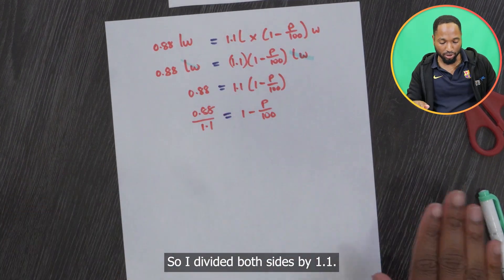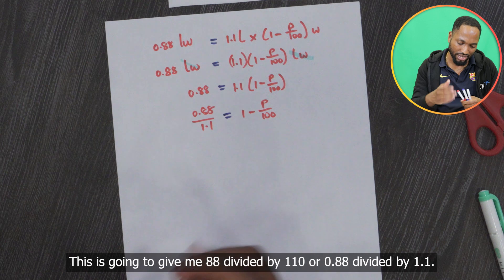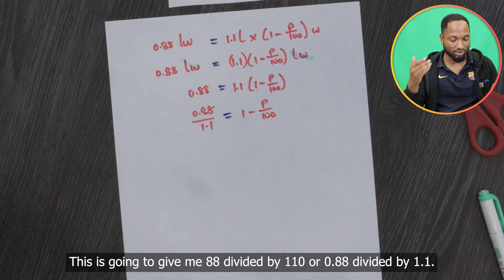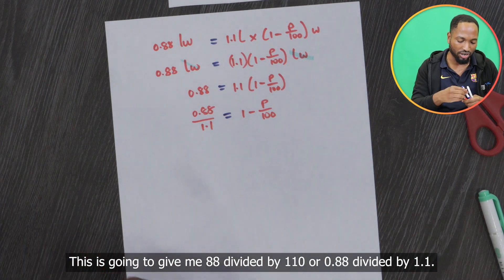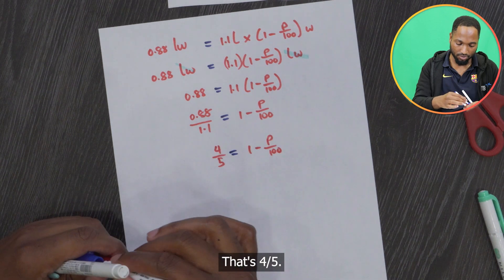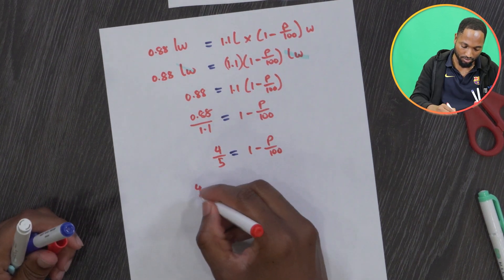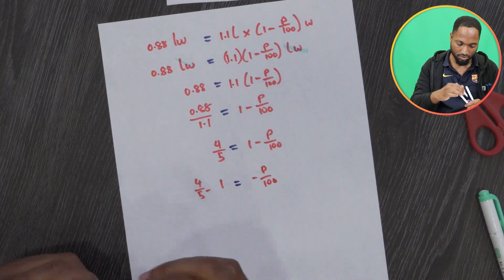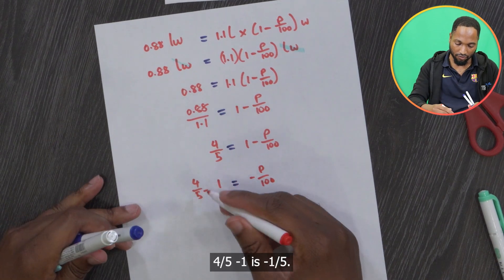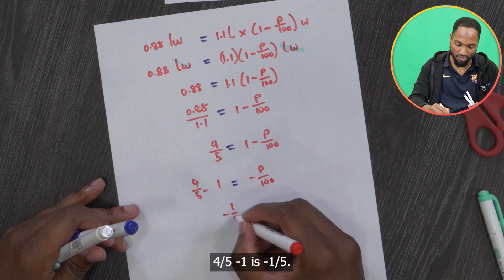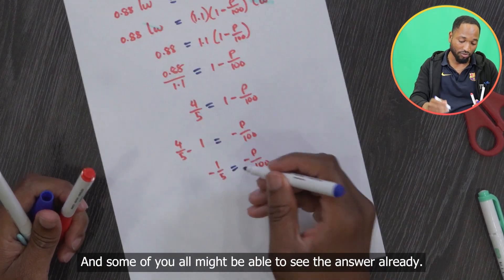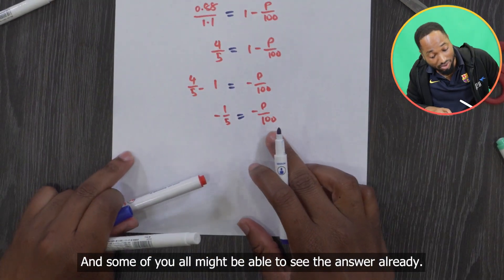So I divided both sides by 1.1. This is going to give me 88 divided by 110, or 0.88 divided by 1.1, that's four-fifths. Four-fifths minus 1 is negative one-fifth. Some of you might be able to see the answer already.